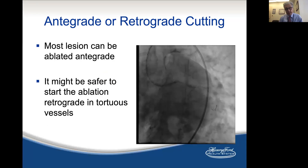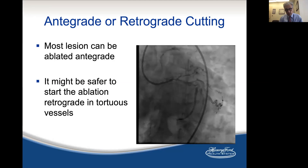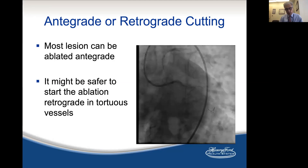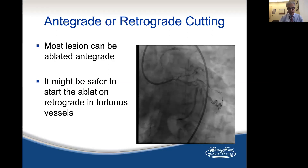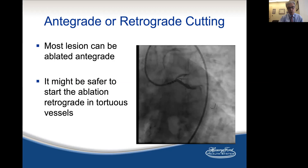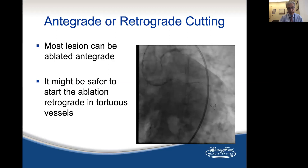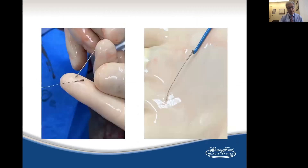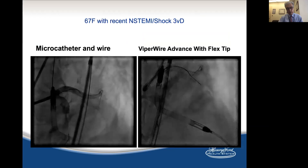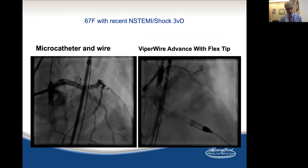There is a debate about antegrade versus retrograde cutting. I think if you can do retrograde cutting, that may be safer. If you have to deal with significant tortuosity, you should probably go with retrograde cutting. This is an example of tortuosity where you should probably avoid the procedure. Also shown here is a drive shaft separation from the crown — it was easily retrieved by pulling back using a guide extension.